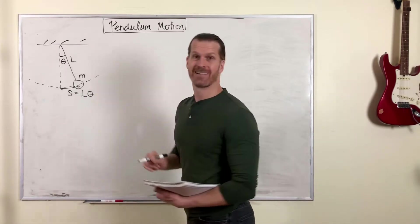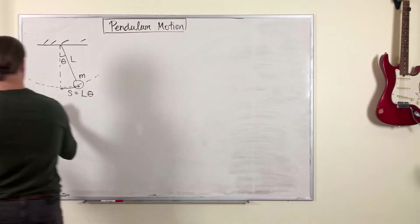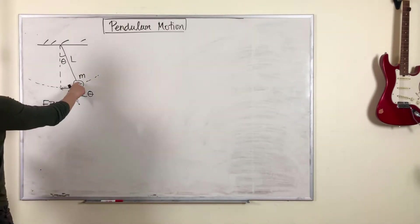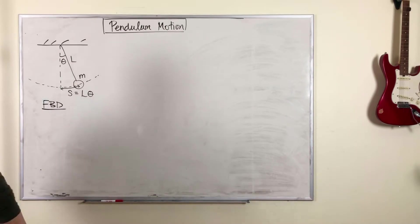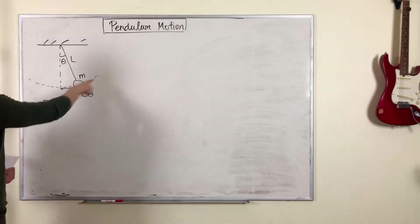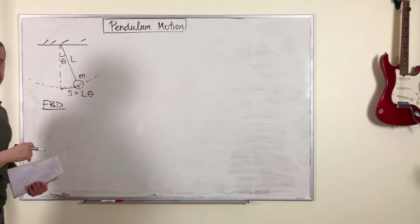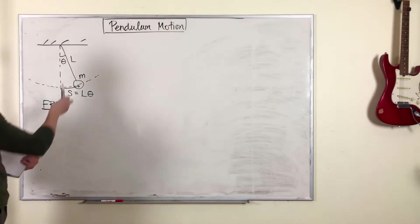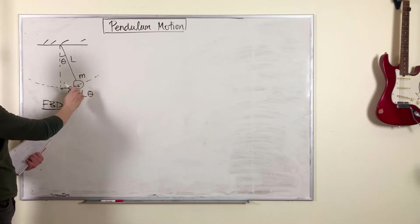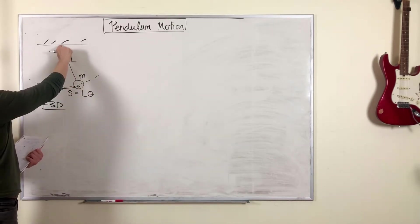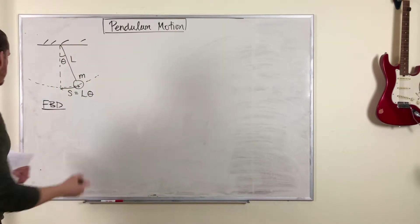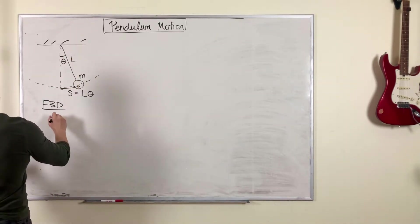So a free body diagram for this pendulum would look like this. Here's our object of interest, the mass. And because it's moving in a circular path, we'll use a polar or circular coordinate system where you have a radial direction pointing toward the center of the circle. That's where the string is tied, and a tangential direction moving along the tangent of that circle.